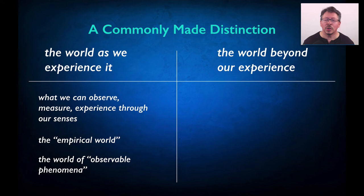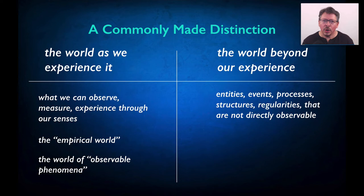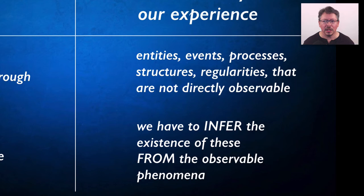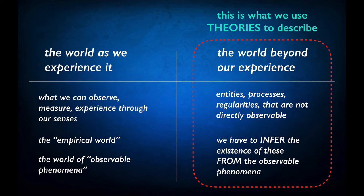with our conception of the world beyond our experience — the world that lies behind the appearances. So how do we talk about this world beyond our experience? We contrast what is observable with what is not observable, or at least not directly observable. The world beyond our experience is the world of entities, events, processes, structures, and regularities that are not directly observable. In science we acknowledge that we don't have direct access to these elements; we have to infer their existence from the observable phenomena. We use the concept of a theory to talk about these aspects of nature — the parts of the world that go beyond what we can directly verify through observation.